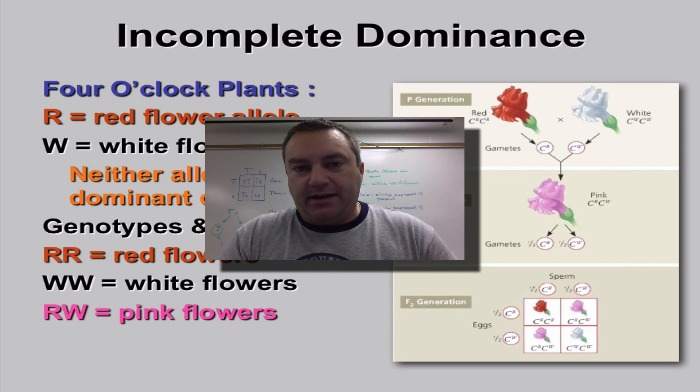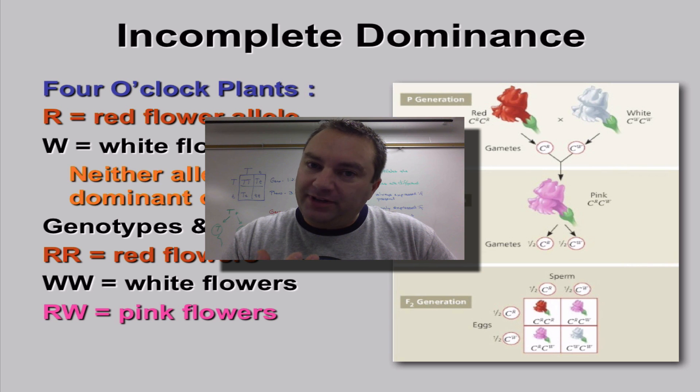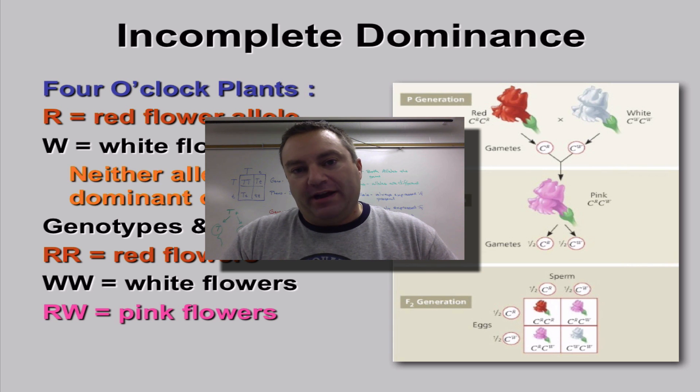Alright, welcome to part number 10 in our chapter 11 series on basic genetics. In this episode, you're going to learn about a couple of really unique gene interactions called incomplete dominance and codominance.